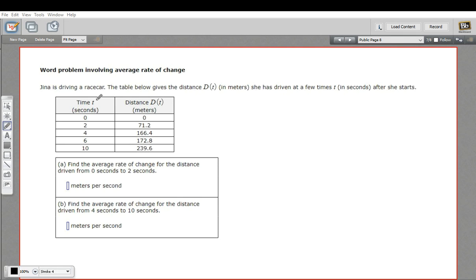And we've got this time t and distance is written as a function in terms of t, D(t). That makes sense because the amount of distance she's gone depends on the amount of time she's taken to go that distance.